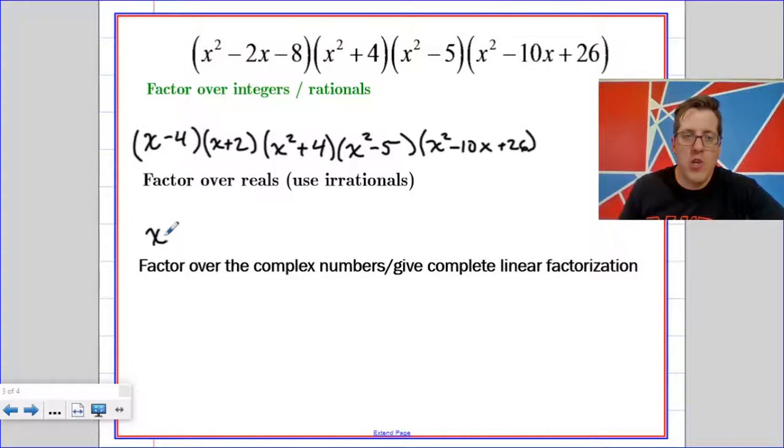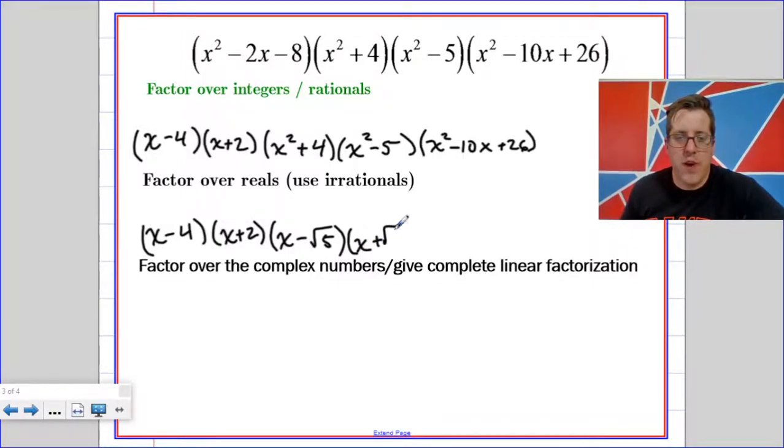But x squared minus 5 does have real zeros. They are just irrational. So I want you to think of x squared minus 5 as a difference of squares. And you say, Mr. Troy, 5 isn't a perfect square. Yeah, whatever, pretend it is. So if it were a perfect square, it would break up to its square roots. x minus root 5, x plus root 5. The other ones aren't going to break up that way.